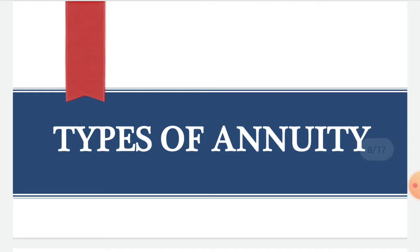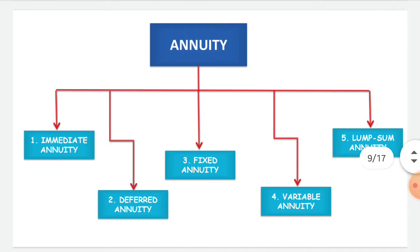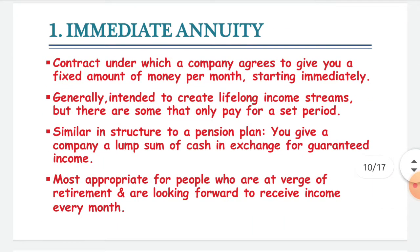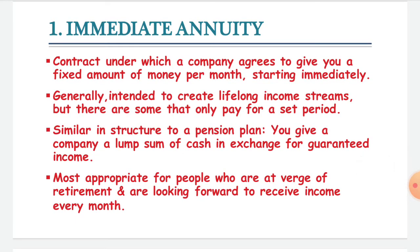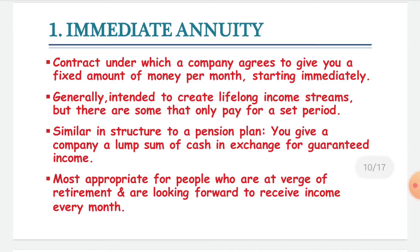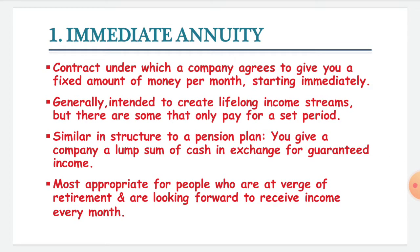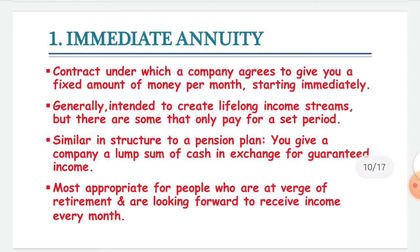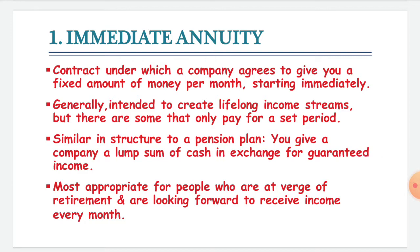Now let's see different types of annuity: Immediate, Deferred, Fixed, Variable, or Lump Sum annuity. Immediate annuity is a contract under which a company agrees to give you a fixed amount of money every month. It is generally intended to create lifelong income streams, meaning regular income. It is similar in structure to a pension plan — you give a company a lump sum of cash in exchange for guaranteed income. It is most appropriate for people who are at the verge of retirement and looking to receive income regularly.